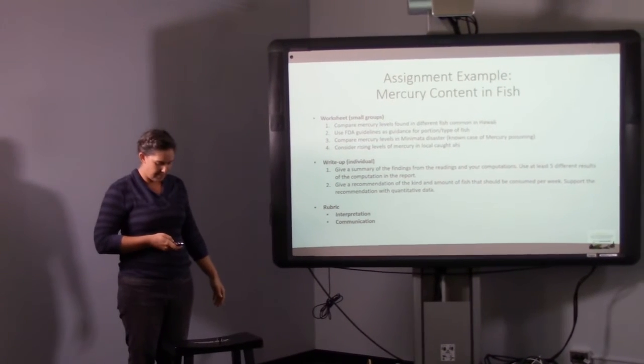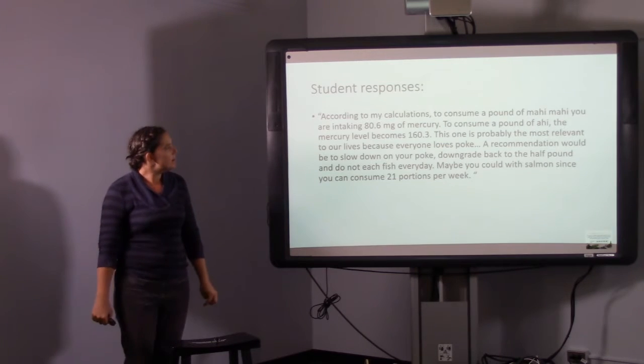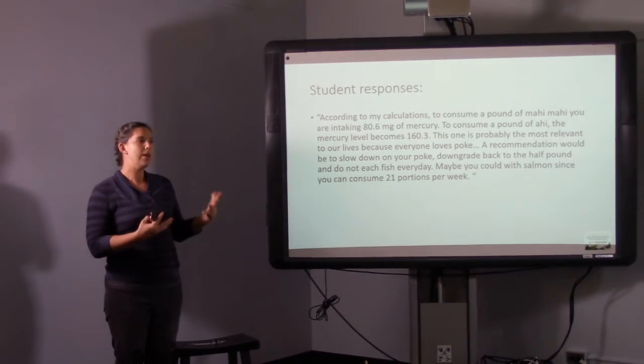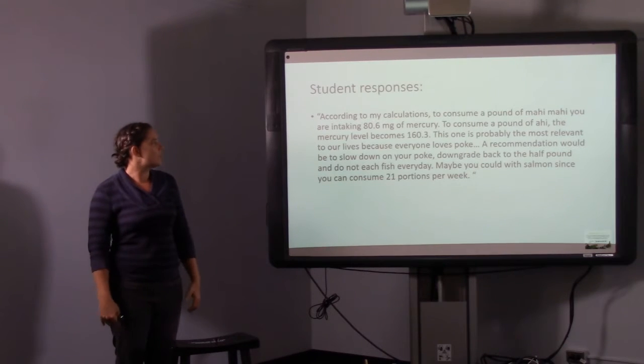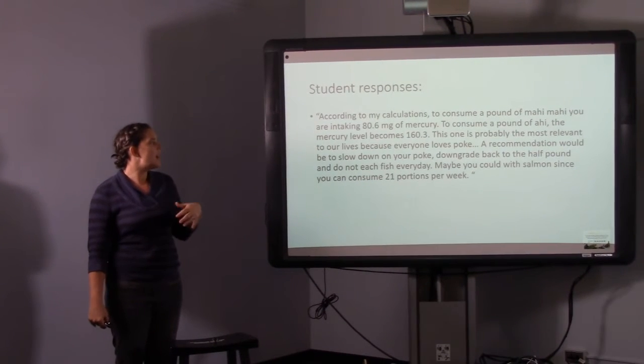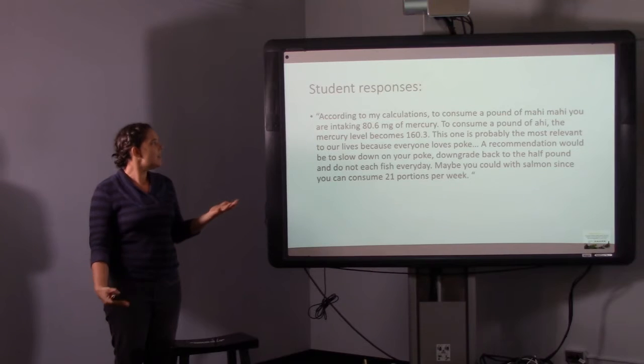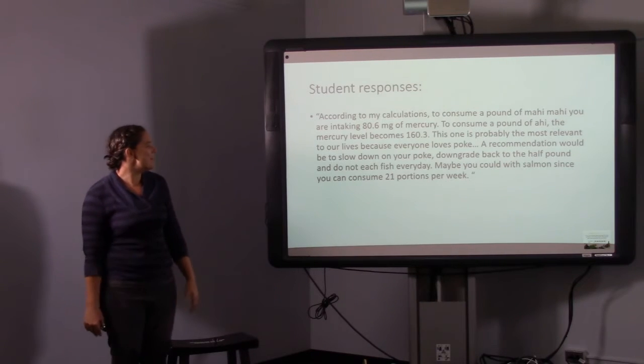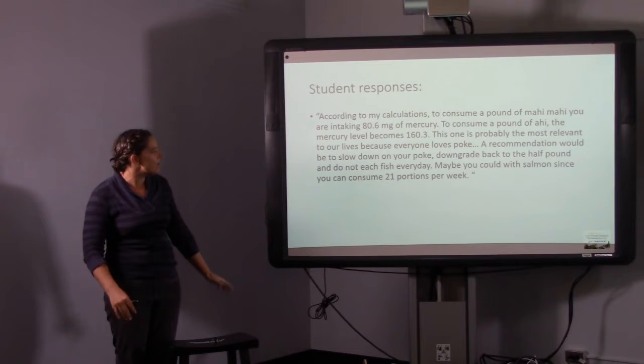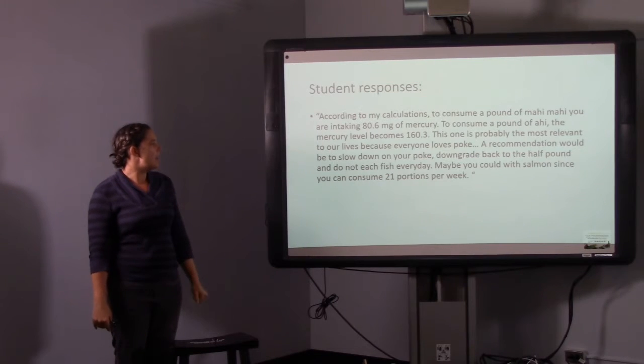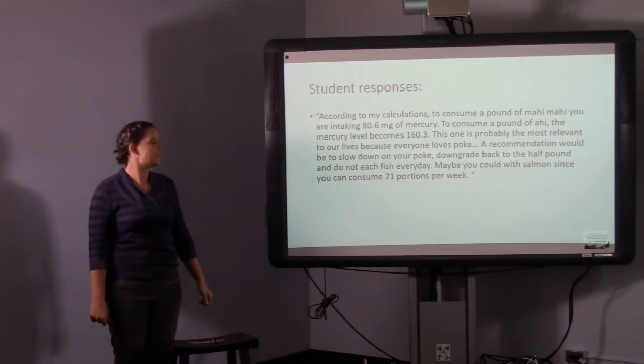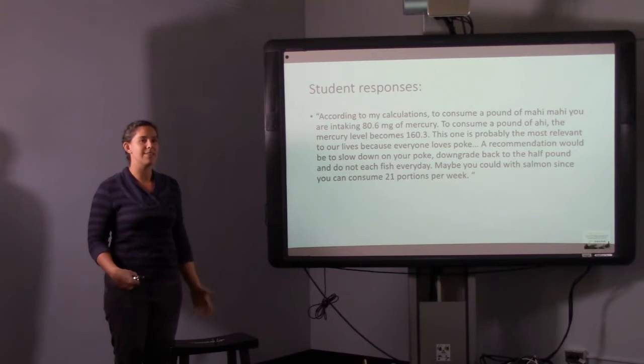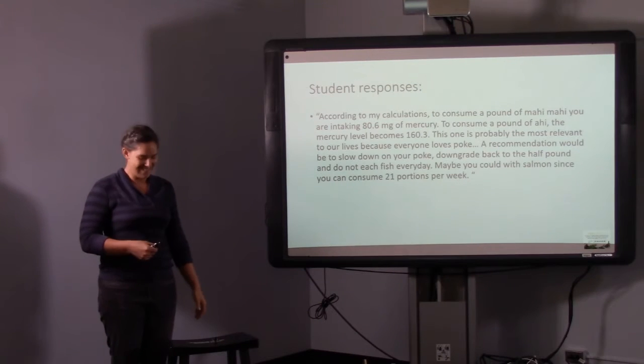I'm going to give you some examples of what students responded. So here this is one of a slightly weaker student, but I thought it was kind of a nice example. So this is a really baseline interpretation. So if you consume a pound of mahi, you're taking 80 milligrams of mercury. If it's ahi, it's 160. Everyone loves poke. You want to slow down, downgrade back half a pound. And then here she was saying maybe you could use salmon because salmon was one of the lower ones. And then she also added on, look, don't eat salmon poke because that's gross.